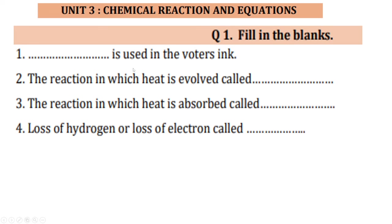The first question is, this is used in the voter's ink. Which part is used in the voter's ink? You know that it is silver nitrate. That is AgNO3, silver nitrate is used in the voter's ink.